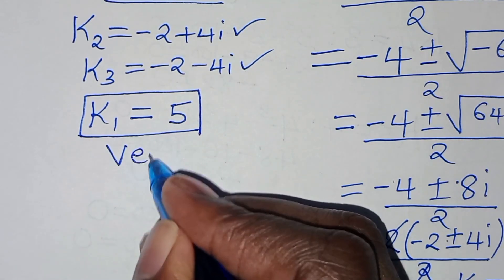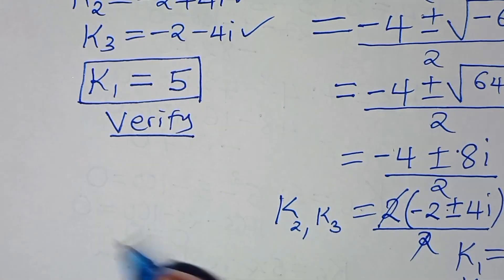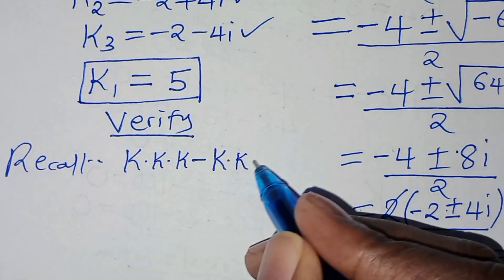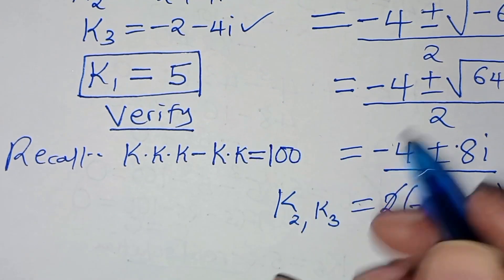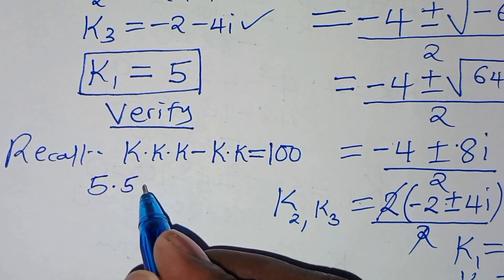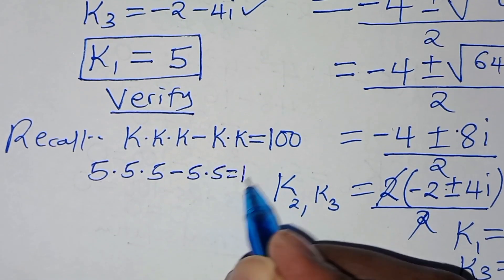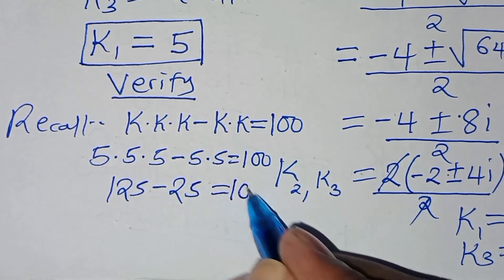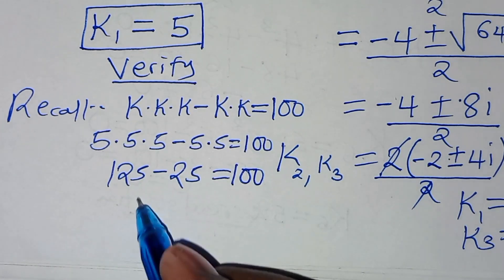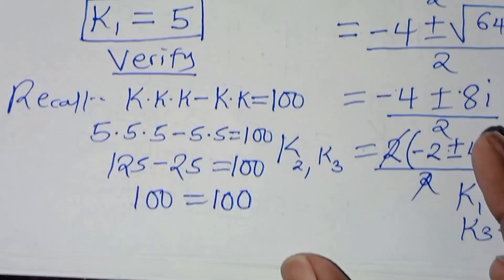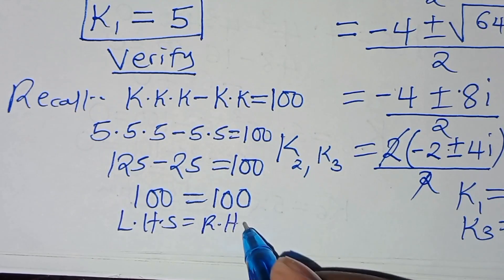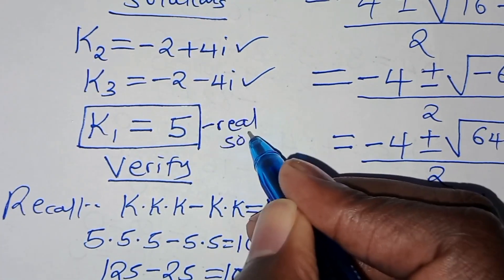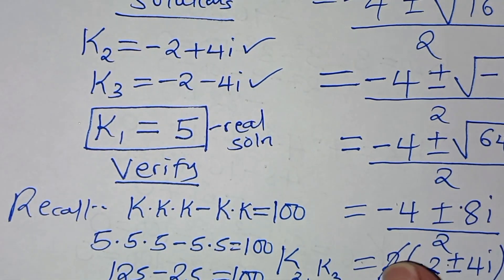Let's verify: recalling that k times k times k minus k times k should equal 100, substituting k=5 gives 5 times 5 times 5 minus 5 times 5, which is 125 minus 25, equal to 100. The left hand side equals the right hand side, confirming three solutions: one real solution k=5 and two complex solutions k₂ and k₃.